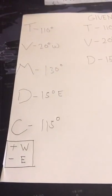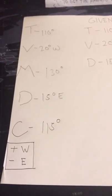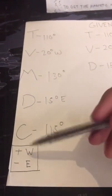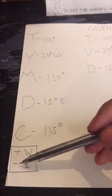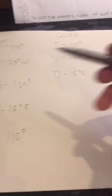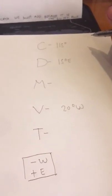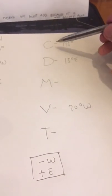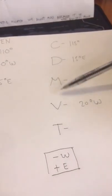On this side, if west, we need to add; if east, we need to minus. The other side, we simply copy the initials — same as one. So, CDMTT.